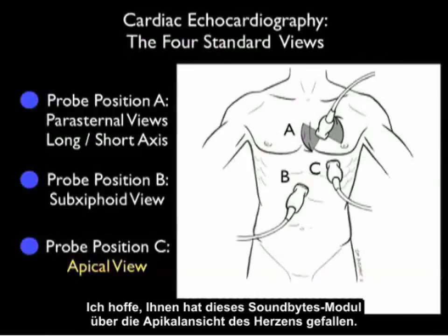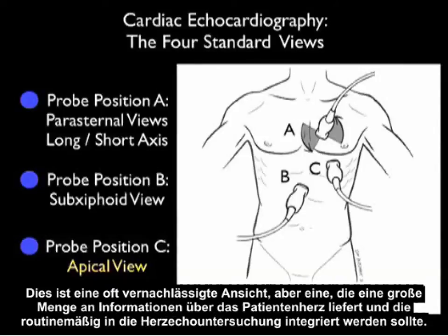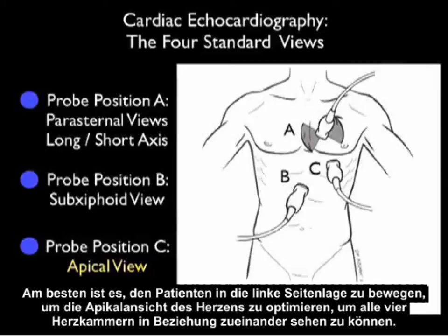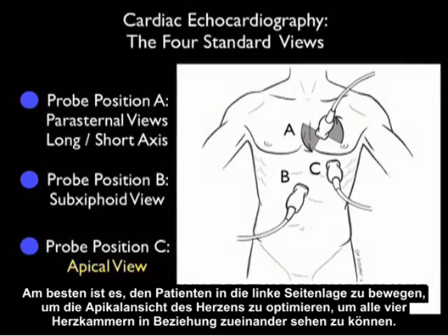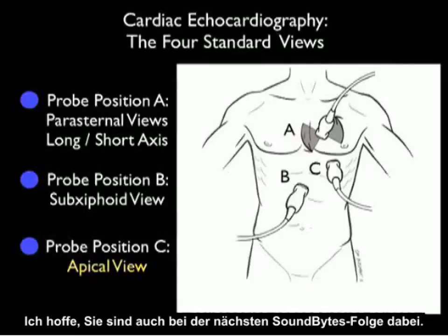In conclusion, I'm glad I could share with you the SoundBytes module going over the apical views of the heart. This is an often neglected view, but one that gives a great deal of information about your patient's heart and really should be routinely integrated into the cardiac echo examination. It's best to move the patient into the left lateral decubitus position to optimize imaging from the apical view of the heart, to see all four chambers in relation to one another. I hope to see you back as SoundBytes continues.